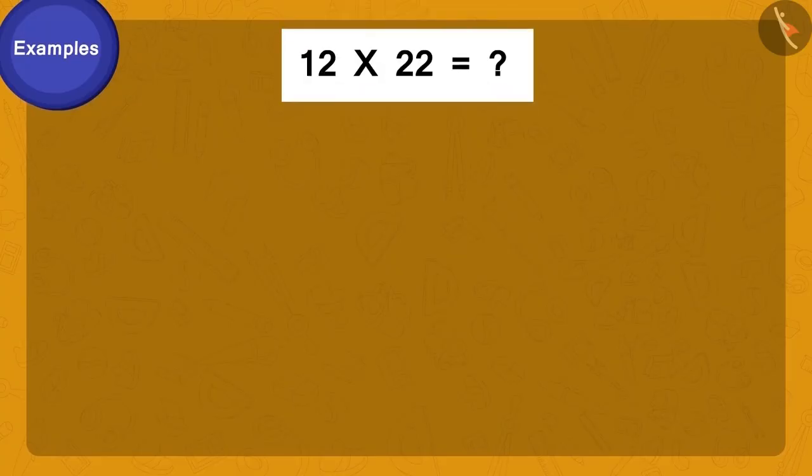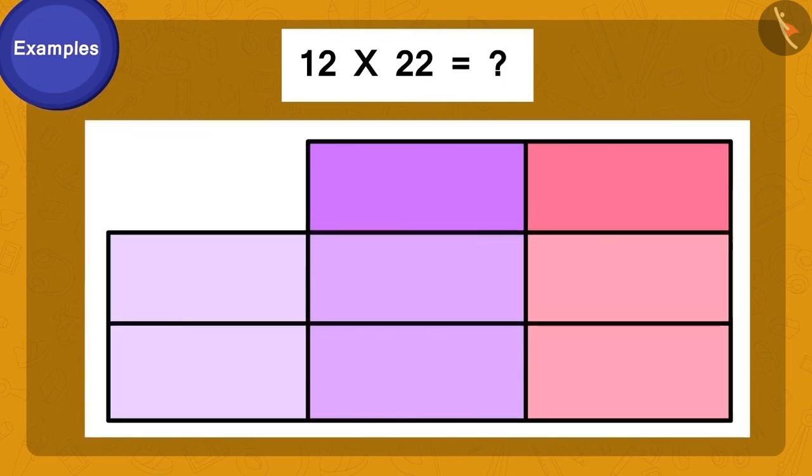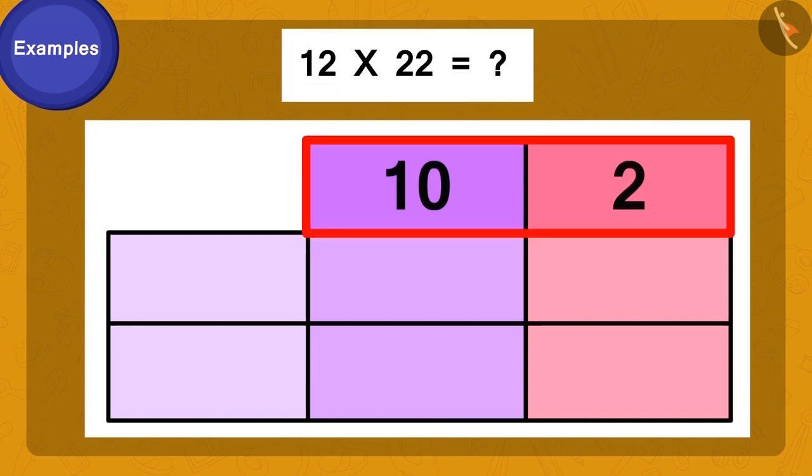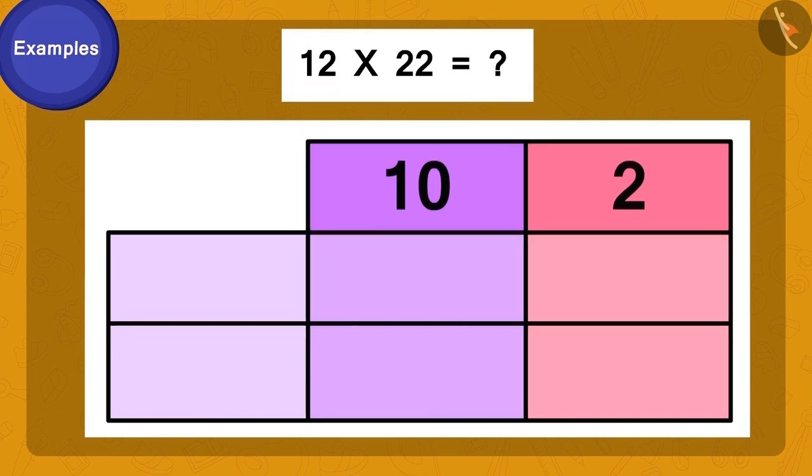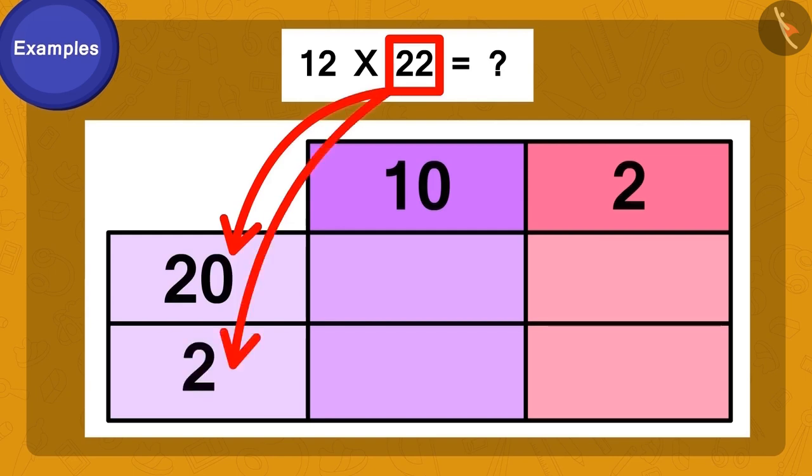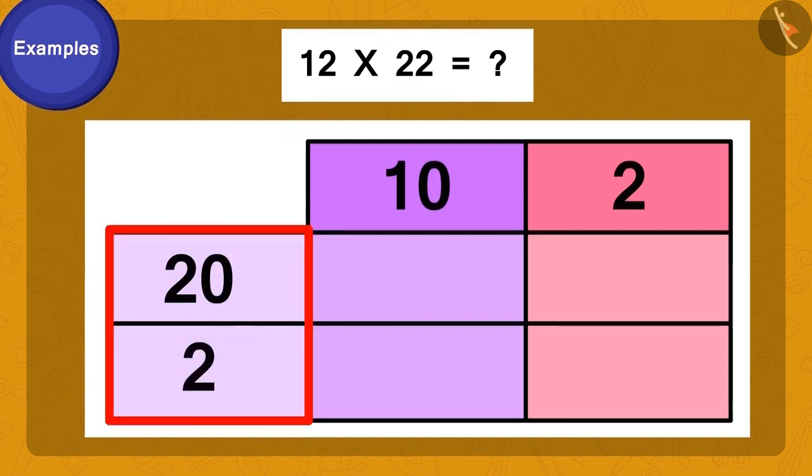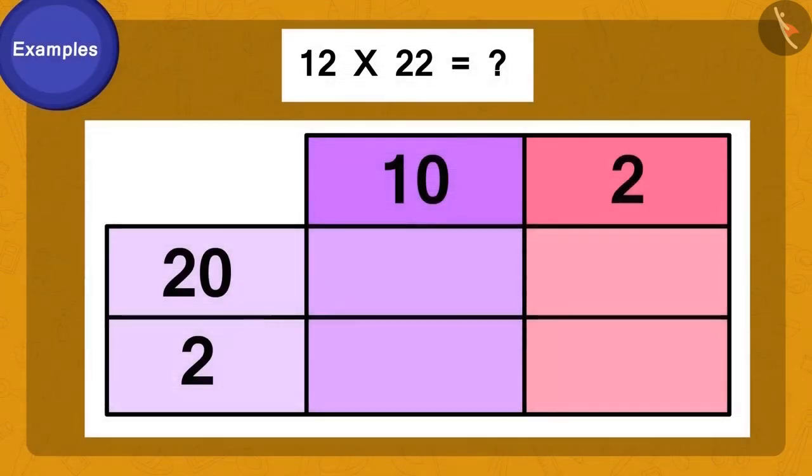Come, let us learn to multiply two two-digit numbers. How can we split twelve? Ten and two. We will write it this way. And how can we now split twenty-two? Twenty and two. We will write it this way.